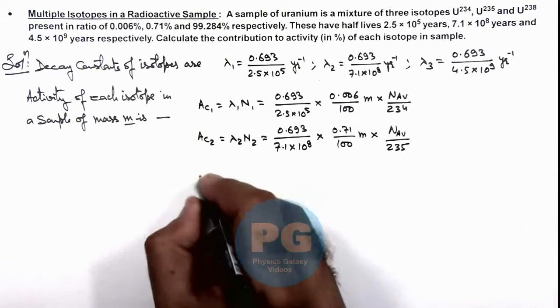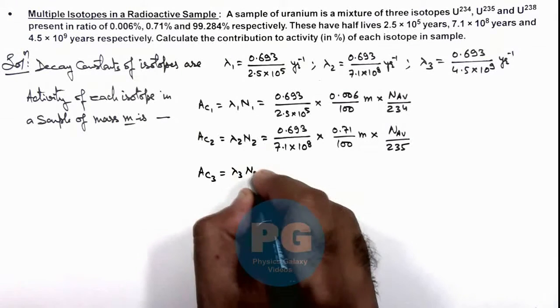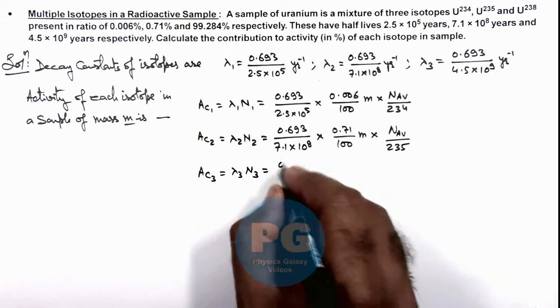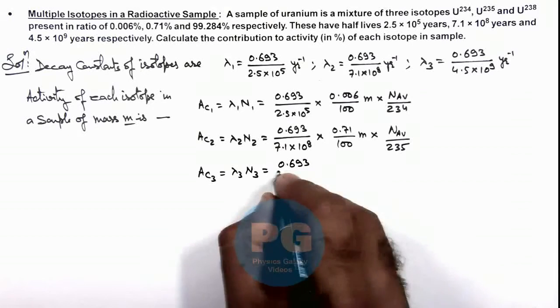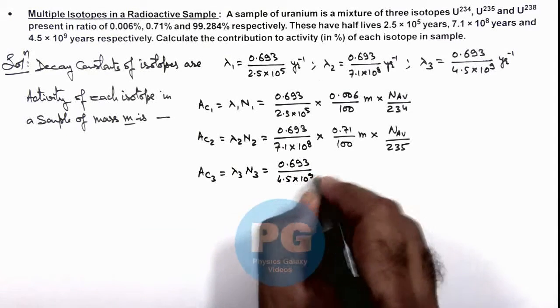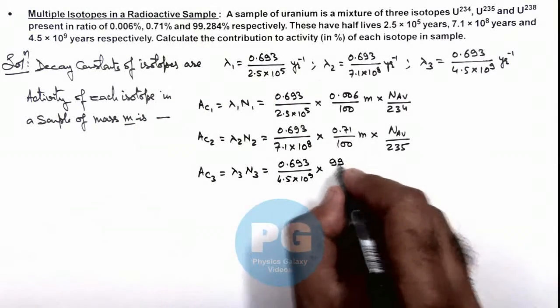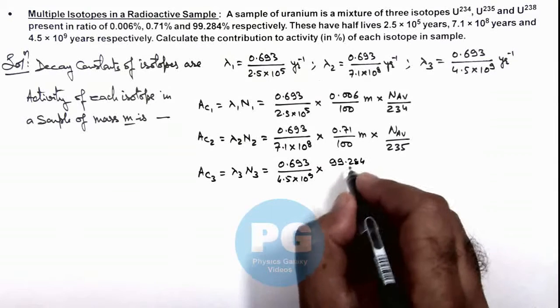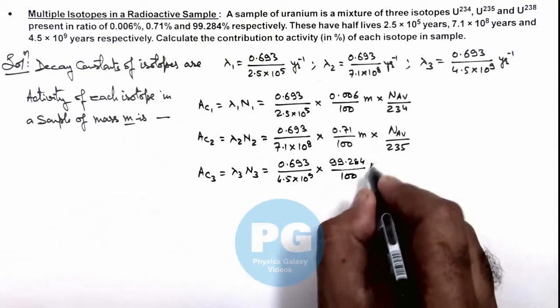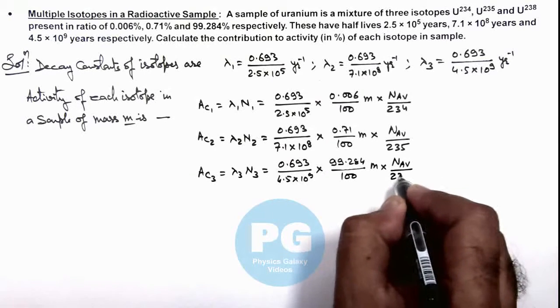And for the activity of third isotope it is lambda 3 n3, that is 0.693 by 4.5 × 10^9 multiplied by its mass, which is maximum at 99.284 divided by hundred times m multiplied by Avogadro number by 238.